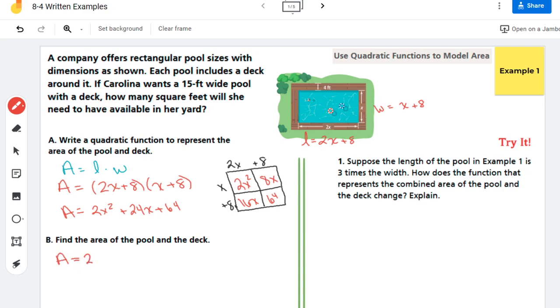So I'm going to go ahead and plug in a 15 everywhere where you see an x. And this is going to find the area of the pool that she's thinking of. I'm just opening up a calculator tab. So 15 squared is 225. And if I multiply that times 2, I get 450 for this first term. Now for my second term, 24 times 15 gives me 360. And then I'm adding 64. So if I go ahead and add 360 plus 64 plus 450, I get 874 square feet. So that would include the pool and the deck.